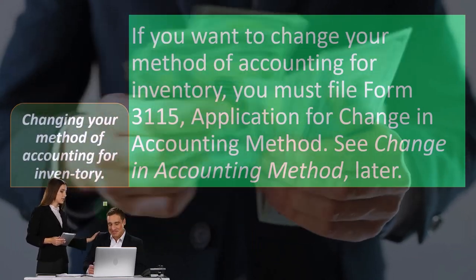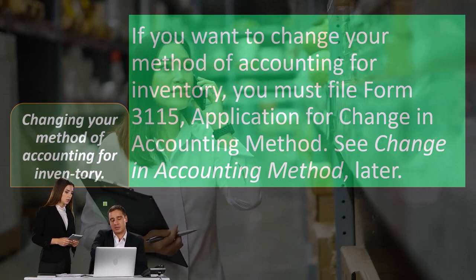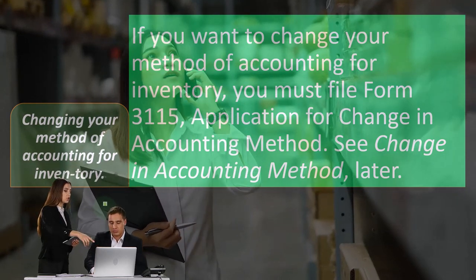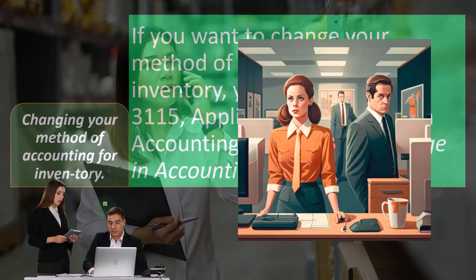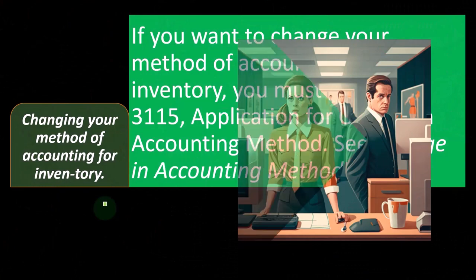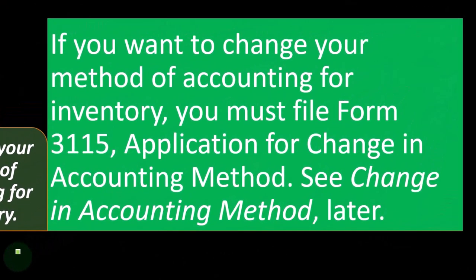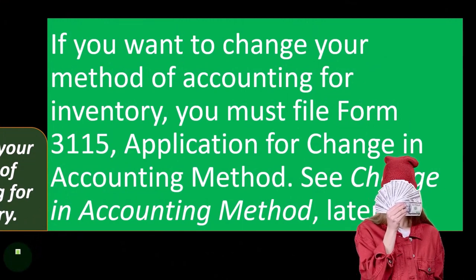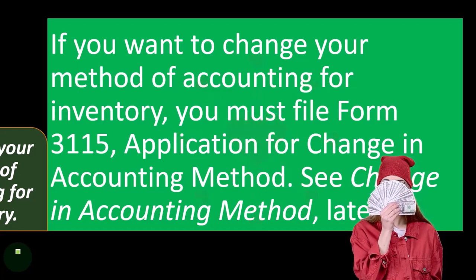Changing your method of accounting for inventory. If you need to change it — possibly because you're on a cash-based method and think it's more appropriate to be on an accrual-based method given that you have inventory, and that inventory has increased — if you want to change your method of accounting for inventory, you must file Form 3115, Application for Change in Accounting Method. You have to ask the IRS for permission.